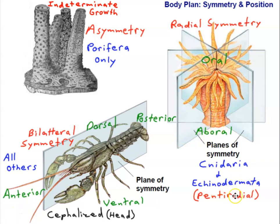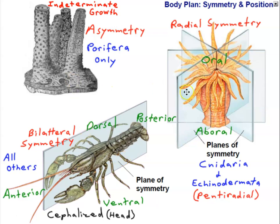Echinoderms are pentaradial as adults — radial symmetry based on the number five. All other phyla besides Porifera, Cnidaria, Ctenophora, and adult Echinodermata are bilaterally symmetrical. Body plan is described in part by the form of development — either protostome or deuterostome — and by the form of symmetry: either asymmetrical, radially symmetrical, pentaradially symmetrical, or bilaterally symmetrical.